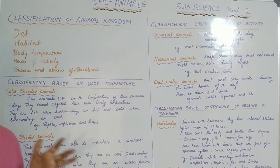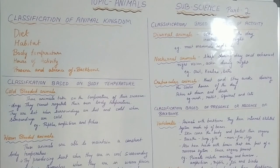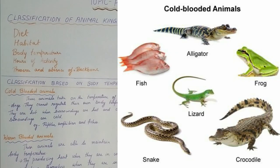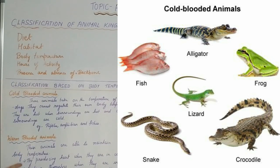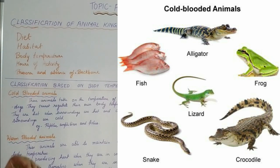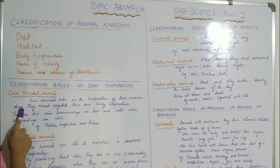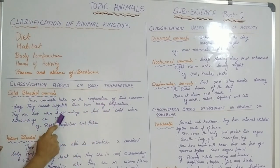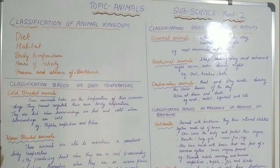They are cold-blooded animals and warm-blooded animals. In the cold-blooded animals, they are not able to regulate the body temperature according to the surroundings — they change according to the surroundings. When the temperature is hot, the body also becomes hot, and when the temperature becomes cold, the body also becomes cold. These animals take on the temperature of the surroundings; they cannot regulate their own body temperature.